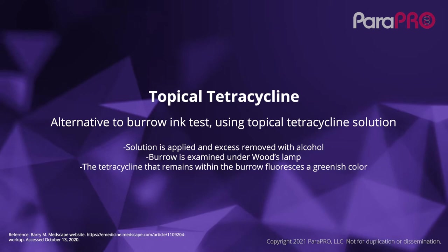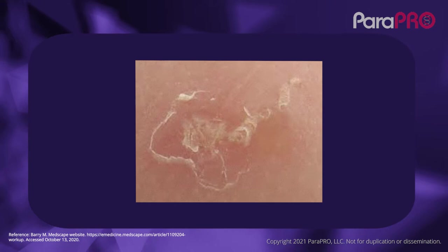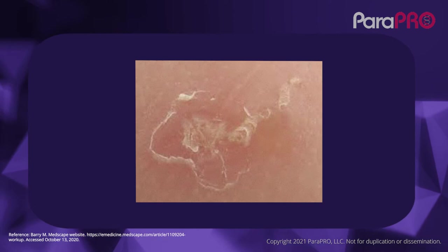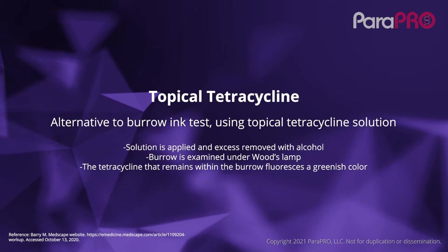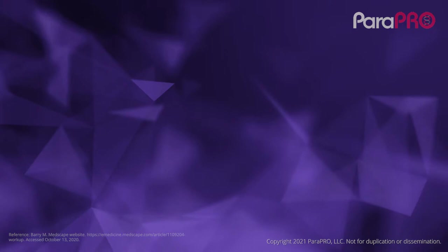Similarly, a tetracycline solution can be applied to the suspected sites, excess wiped away with alcohol, and then a Woods lamp — which emits ultraviolet A radiation — used to illuminate the area, and a greenish color or hue may represent a burrow. This technique is probably seldom used by dermatologists, family practitioners, primary care physicians, or other clinicians.